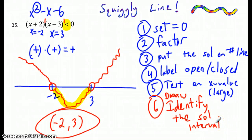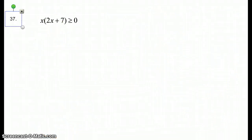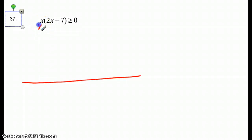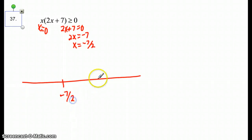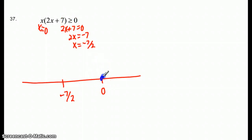Let's go to the next homework problem. We've got our first two steps done for us, so let's go ahead and draw the squiggle. We've got x equals 0 as a solution from the factor x. Then 2x plus 7 set equal to 0 gives 2x equals negative 7, so x equals negative 7 halves. I have negative 7 halves and 0 on the line. It has an equal sign, so I know the points are going to be closed circles.